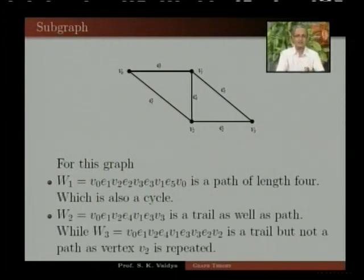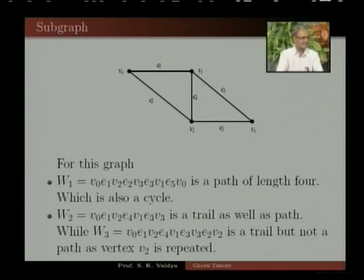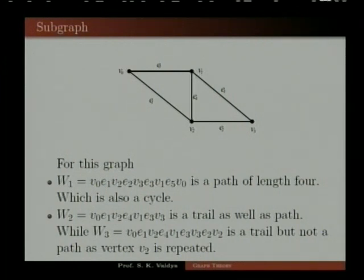Consider walk W2: V0, E1, V2, E4, V1, E3, V3 — this is a trail as well as a path. While walk W3: V0, E1, V2, E4, V1, E3, V3, E2, V2 — this is a trail but not a path, as vertex V2 is repeated.